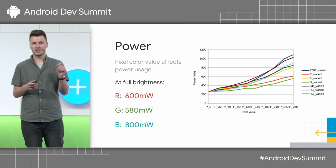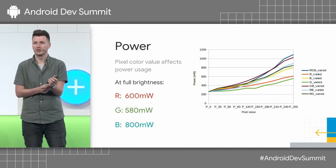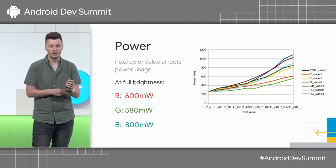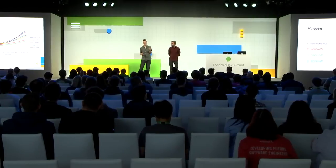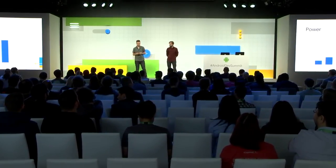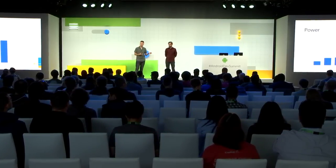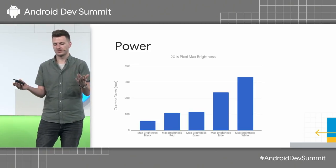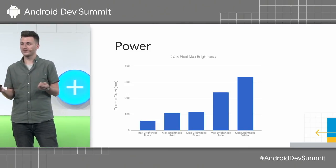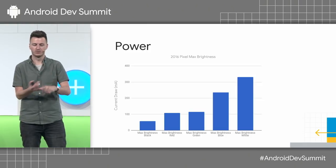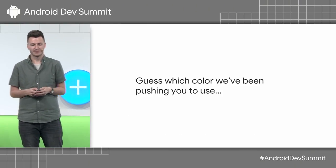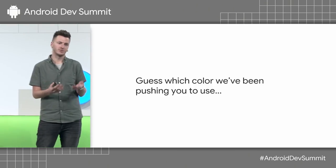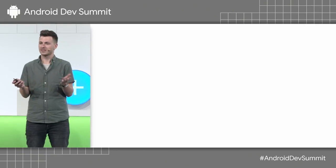Going further into individual pixel colors — we ran a test displaying just one color on the display, and the color itself makes a big difference in power. Blue takes 25% more power than green or red. Black uses the least amount of power, and it goes up until we reach white, which requires full red, full green, and full blue — so it requires the most power. And that's the color we've been pushing toward with Material Design, which changed from Holo's dark theme to a white theme — essentially shooting ourselves in the foot in terms of power.